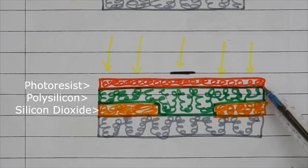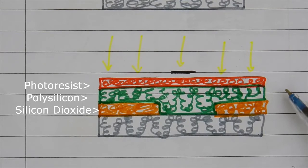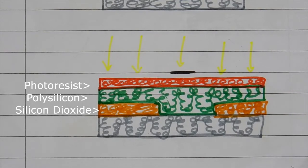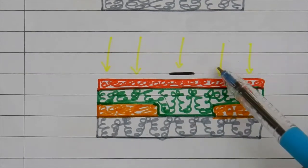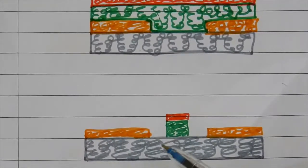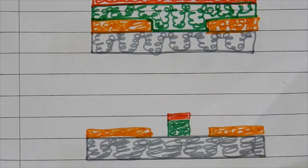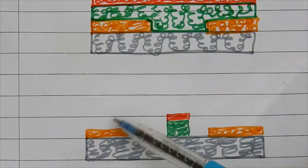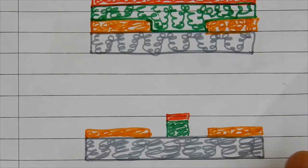This photoresistive material has a different nature - it becomes soft when exposed to light. After masking it with light, we get this result. In this step, we etch away the polysilicon material covering the system using chemical reactions.